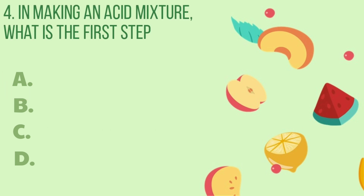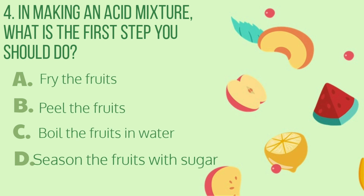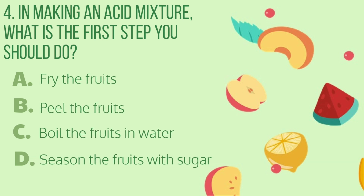Number 4. In making an acid mixture, what is the first step you should do? Letter A: Fry the fruits. B: Peel the fruits. C: Boil the fruits in water. D: Season the fruits with sugar. The correct answer is letter C.